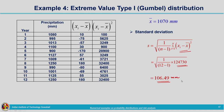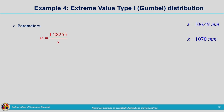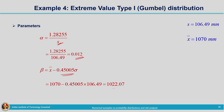With x̄ = 1070 mm and s = 106.49 mm, the Gumbel parameters are computed as: α = 1.28255 / 106.49 ≈ 0.012, and β = 1070 − 0.45005 × 106.49 ≈ 1022.07 mm. The distribution parameters are now determined.